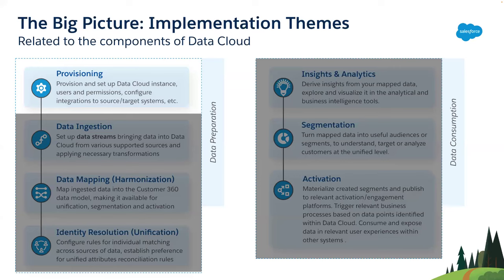What you see on screen is a general data cloud implementation lifecycle. There are two major milestones: data preparation and data consumption. Data preparation talks about how we can get data harmonized into a canonical model, whereas data consumption talks about how this harmonized data can bring value to the customer. In data preparation, the first step is provisioning — that's where we talk about the right level of permissions to give to the user and the integration that can be done with the tool.